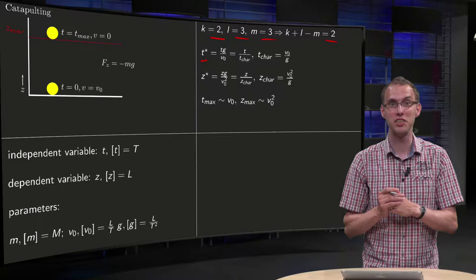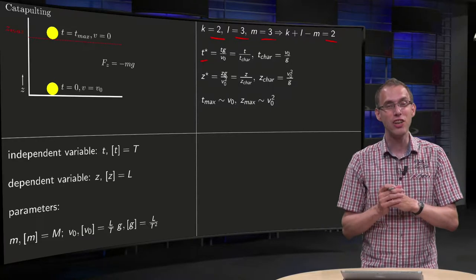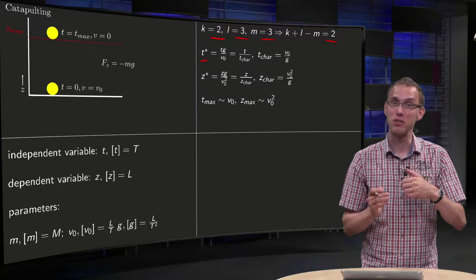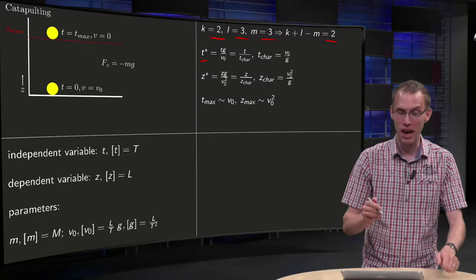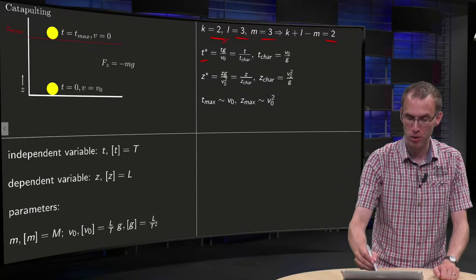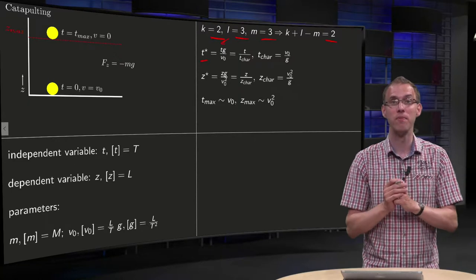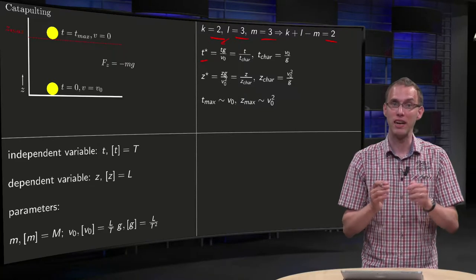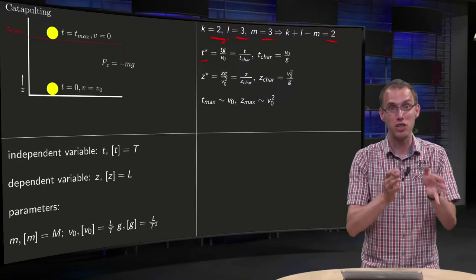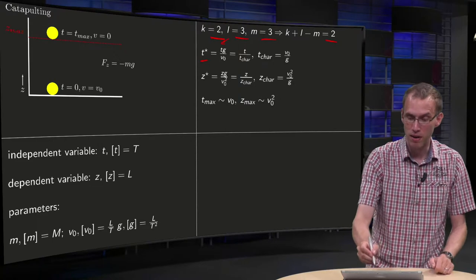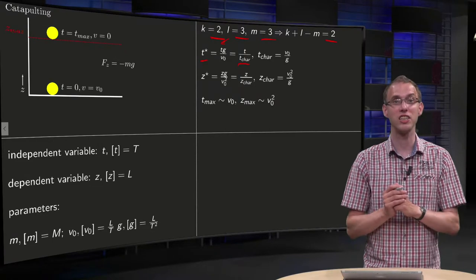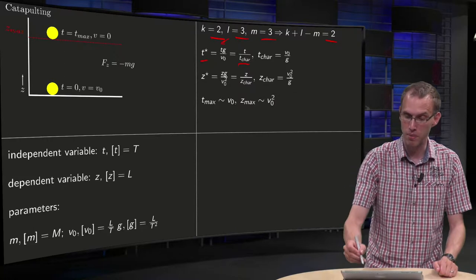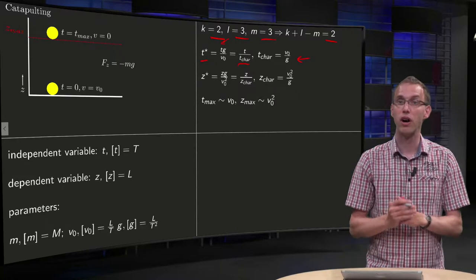And this t* is a particularly nice dimensionless quantity, because in fact it is a dimensionless time, it is proportional to our original t times some constant. So what we actually have over here is our dimensionless time t* equals t divided by some characteristic time t_char, where we define our characteristic time as v0 over g.